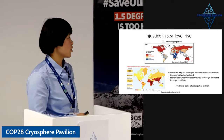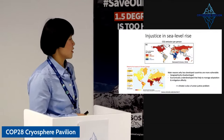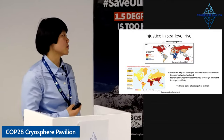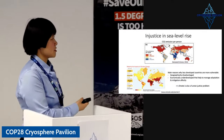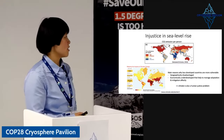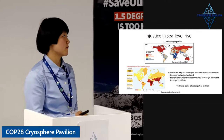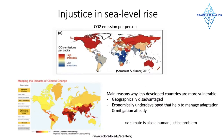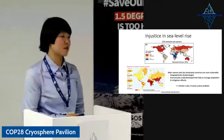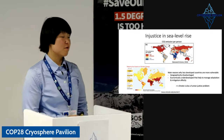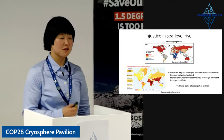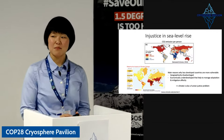The bottom part shows the impacts of climate change around the world, where red regions are more vulnerable to climate change — and these regions are where countries are less developed. The main reasons why less developed countries are more vulnerable to sea level rise and climate change overall is that they are not only geographically disadvantaged but also currently economically underdeveloped, so they can't effectively manage adaptation and mitigation by themselves. It's great that the loss and damage fund at COP28 in Dubai this year has been finalized, but we have a long way to go in terms of raising that fund from hundreds of millions to billions of dollars.